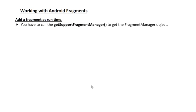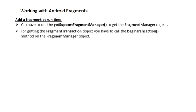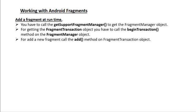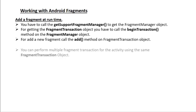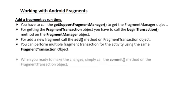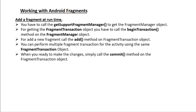To get the FragmentManager object, you call getSupportFragmentManager. To get the FragmentTransaction object, you call the beginTransaction method on the FragmentManager object. To add a new fragment, call the add method on the FragmentTransaction object. You can perform multiple fragment transactions using the same FragmentTransaction object. When you are ready to make the change, simply call the commit method on the FragmentTransaction object.